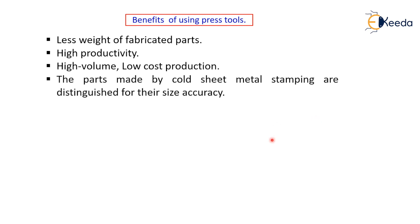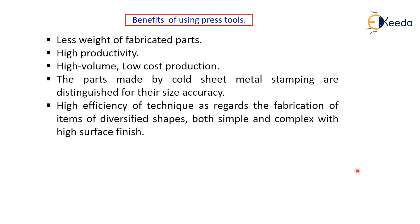The parts made by sheet metal stamping are distinguished for their size accuracy because it is a cold working process, so there is not much variation in the size of the components. Additionally, there is high efficiency of technique as regards the fabrication of items of diversified shape — both simple and complex — with high surface finish. We have seen different applications where components have simple shapes as well as complex shapes.